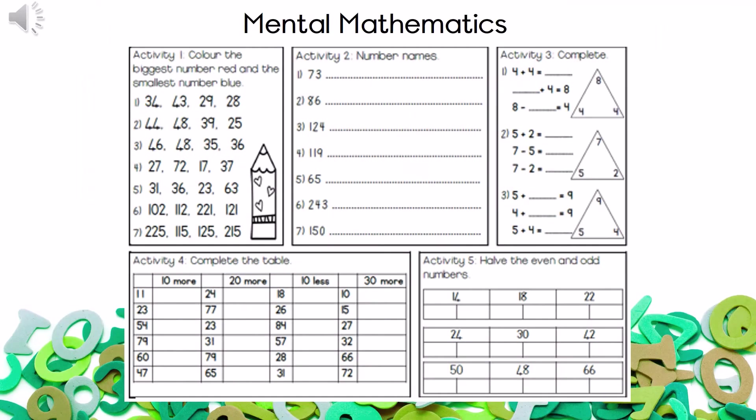We are going to start off with Mental Mathematics. When we do this, you have to think quickly, but you have to work accurately as well. Activity one: colour the biggest number red, and the smallest number blue, in each line.